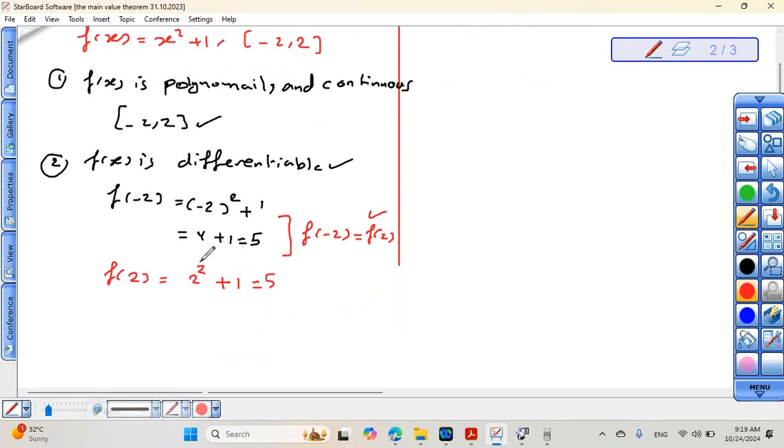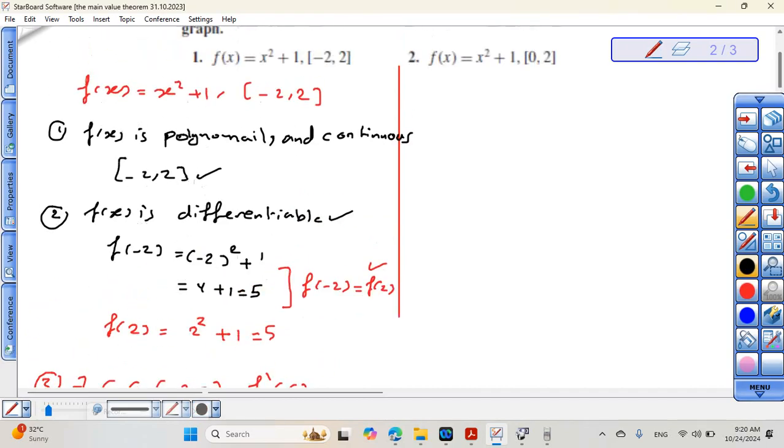Condition 3: There is a C belonging to the open interval from negative 2 to 2, then f prime of C equals 0. Excellent. Let's differentiate the function.